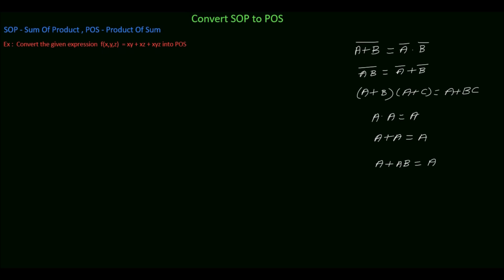In this tutorial we will see how to convert sum of product into product of sum. Let's solve this example. The given sum of product expression is f equal to xy plus xz plus xyz.